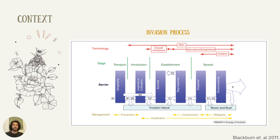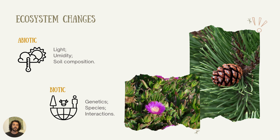The process of invasion by exotic species is characterized by trespassing some stages and barriers before we can evaluate a species as invasive. When it starts to disperse and access other environments, we call it an invasive species. These invasive species can cause changes in ecosystems — in abiotic factors such as light, humidity, or soil composition, or biotic ones such as genetics, species, or interactions. Here we have Pinus and Carpobrotus as examples already seen causing alterations in the environment.